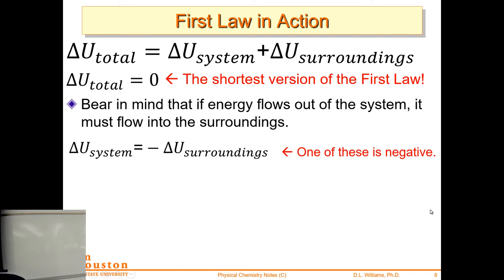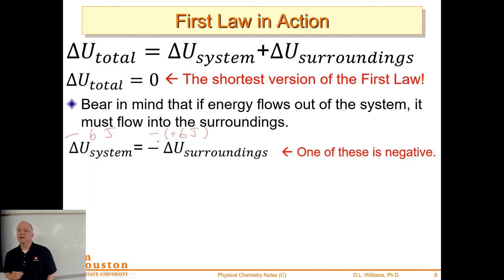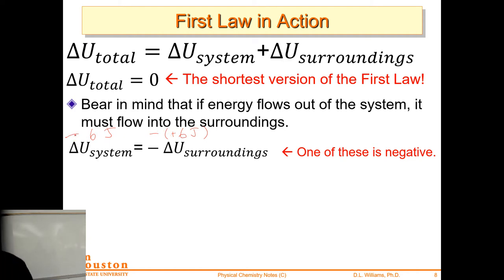For example, if delta U_system is negative six joules, then with that minus sign, delta U_surroundings is positive six joules. So delta U_system negative means delta U_surroundings is positive. To make a negative number equal a positive number, you have to add another minus sign. They're always equal in magnitude, opposite in sign — if it leaves the system, it goes into the surroundings, or vice versa.